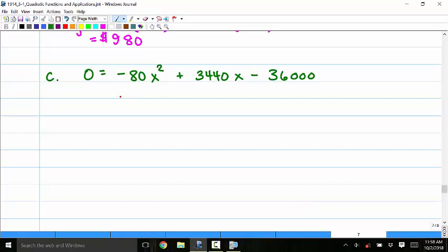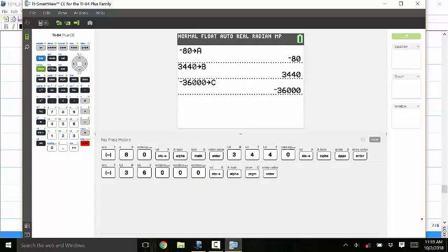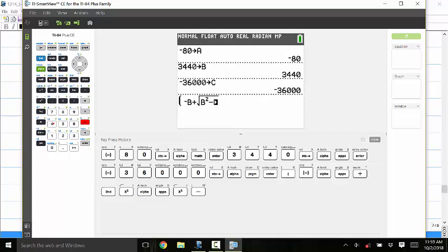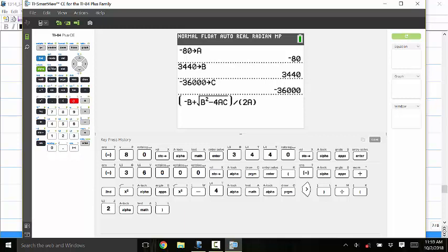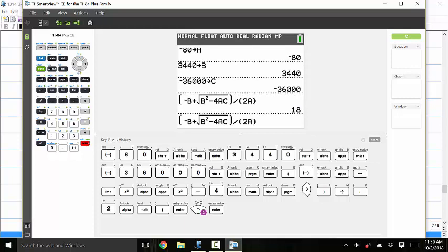All right. That's nothing more than finding the x-intercepts. Use a quadratic formula. And I'm going to go do it all on my calculator. A is negative 80, B is 3440, and C is negative 36,000. We stored A, B, and C into our variables. Our quadratic formula is negative B plus the square root of B squared minus 4AC all over 2A. If I do the minus there, I'm going to put a minus sign.